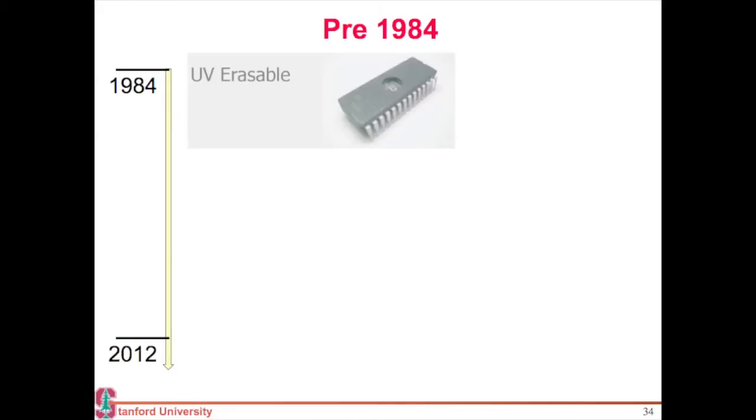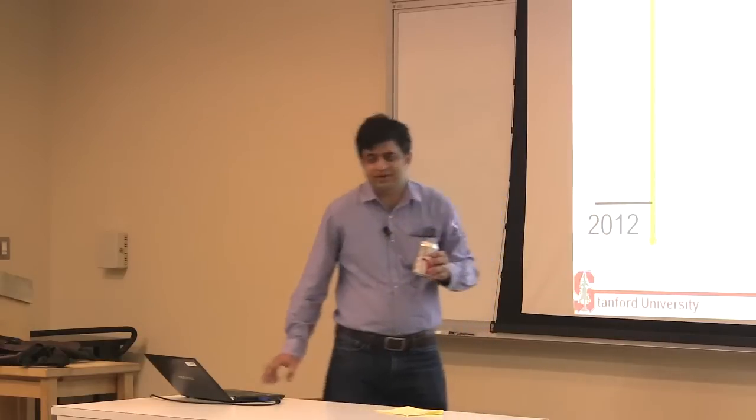These memory cells were available before 1984 as well. You could program a non-volatile memory, but to erase them you had to place them under a UV light. You had to take them under a UV light if you wanted to erase them.